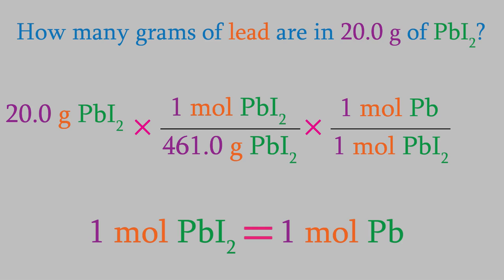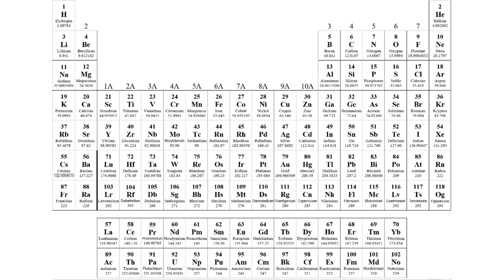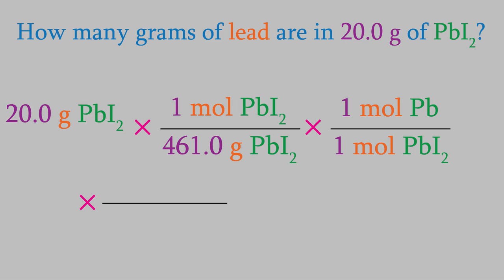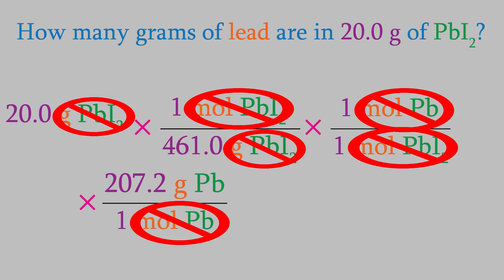If we were to stop the calculation now, our answer would tell us how many moles of lead there are. But what we want to know is how many grams there are. So we have one more conversion factor to do. We want to convert from moles of lead to grams of lead. So we need the periodic table again. The mass of lead is 207.2 grams per mole. We want the moles to cancel, so the one mole will go in the denominator. If you look at these fractions, you'll see that all the units will cancel out except for the grams of lead. And that's what we want to know. So we're finally ready to do our calculation.